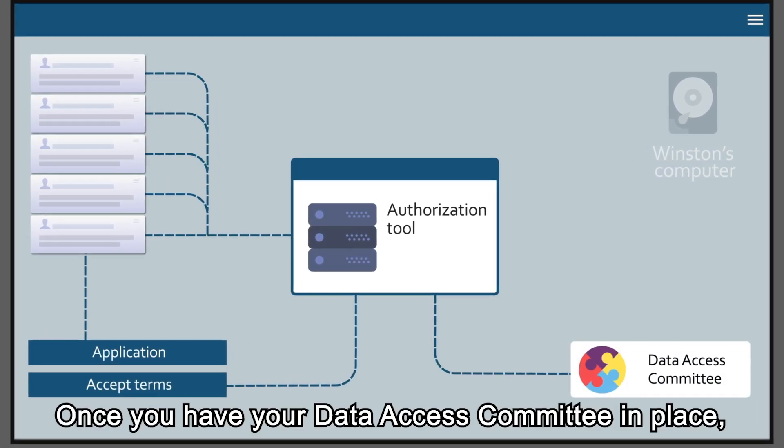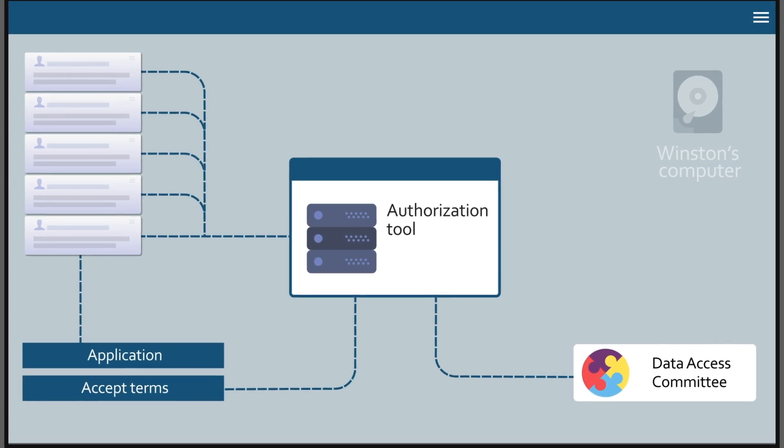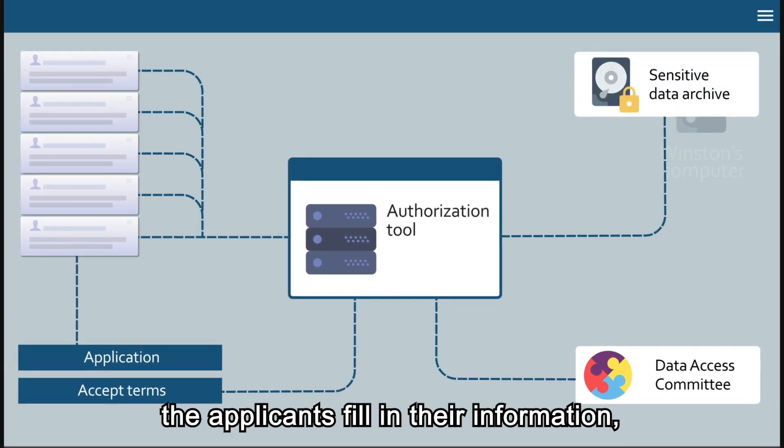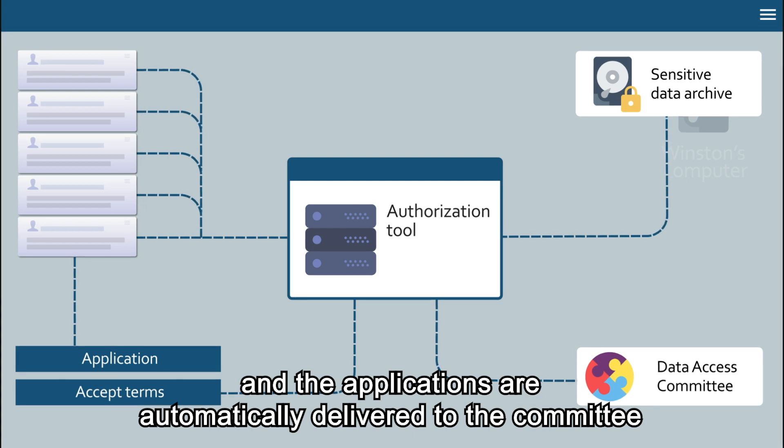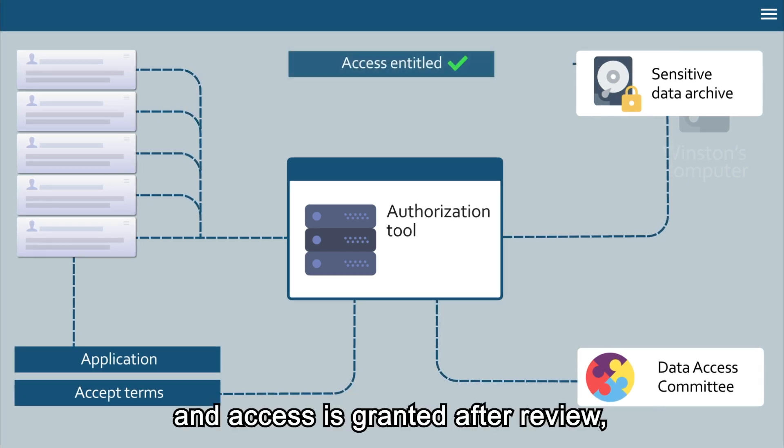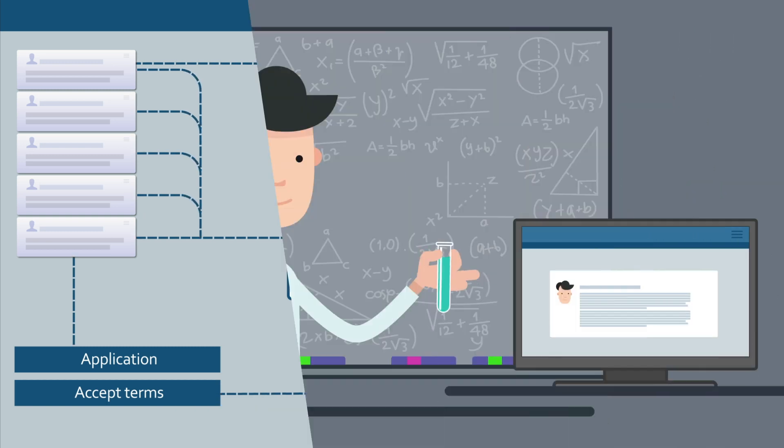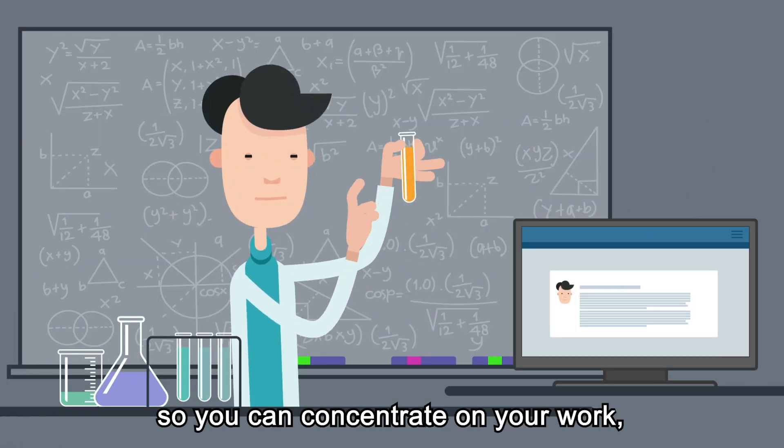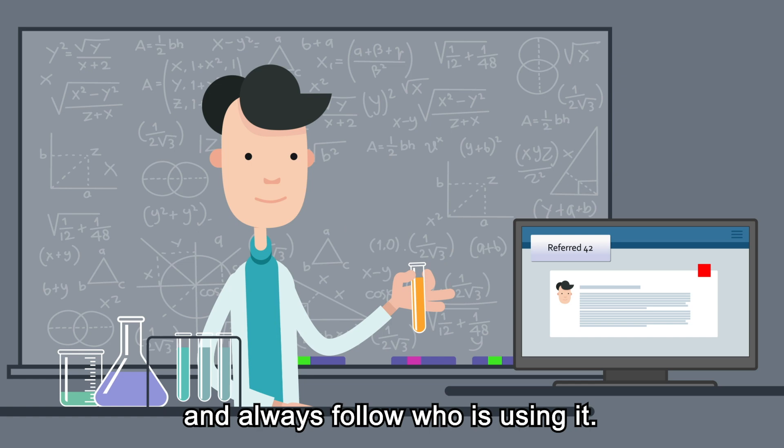Once you have your data access committee in place, the applicants fill in their information, accept the terms and the applications are automatically delivered to the committee and access is granted after review. So you can concentrate on your work and always follow who is using it.